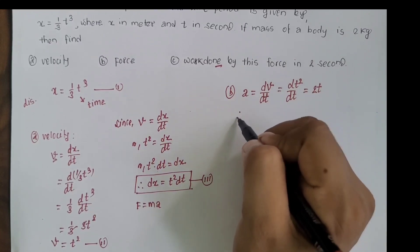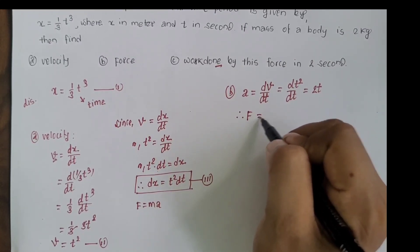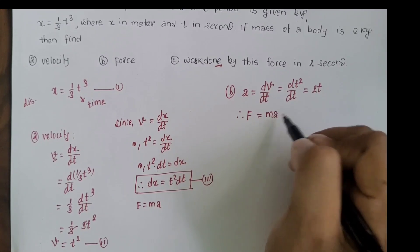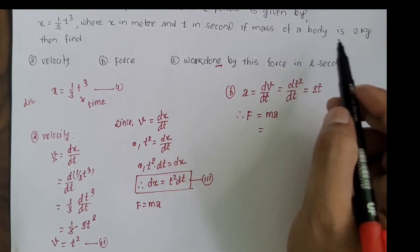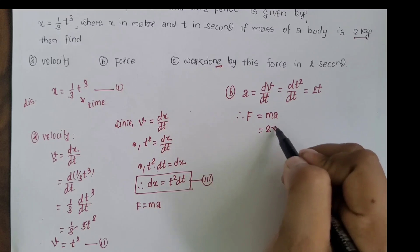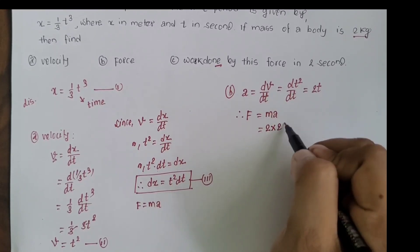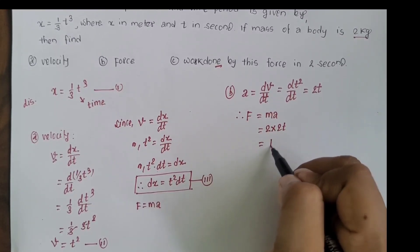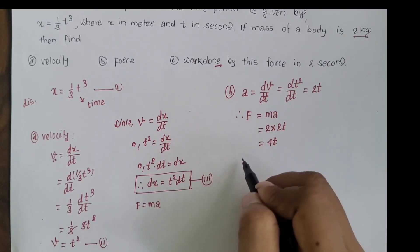Now calculating force: F = ma, where mass from the question is 2 kg and acceleration is 2t. Therefore, force F = 2 × 2t = 4t newtons.